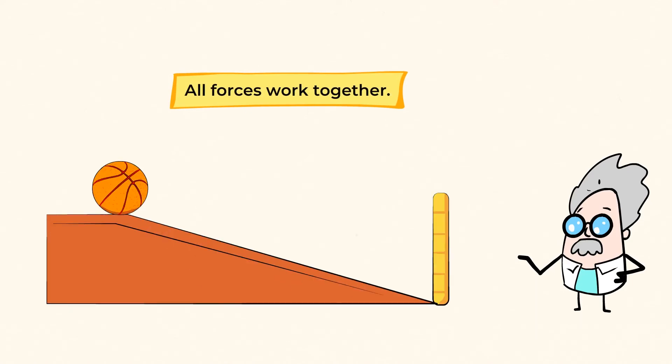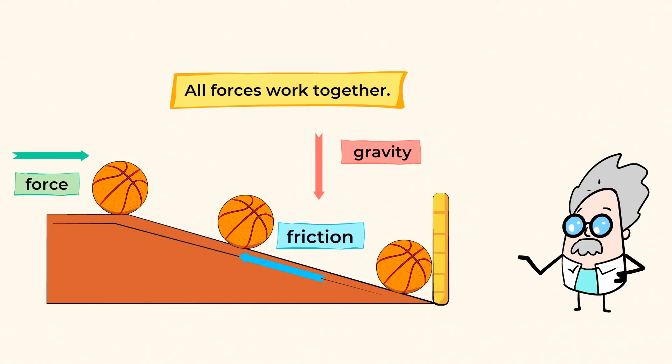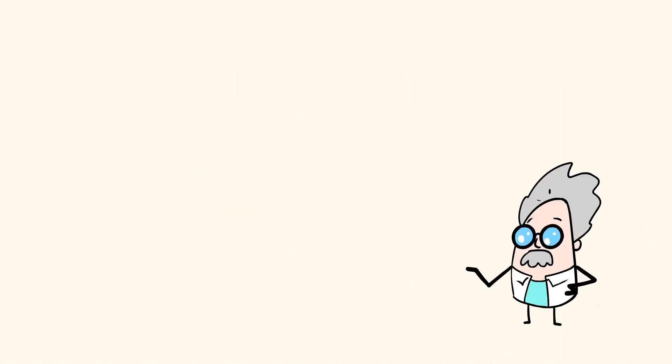Imagine you push a ball down a ramp. The push gets the ball rolling. Gravity pulls the ball down the ramp. Friction pushes back and slows the ball's motion. At the bottom of the ramp, the ball bumps into a wall. The wall pushes back on the ball and stops it from rolling forward. Well, there you go. All the forces we talked about do really work together in real life.